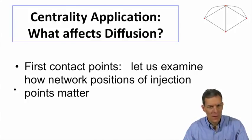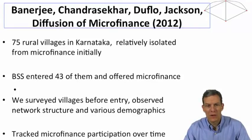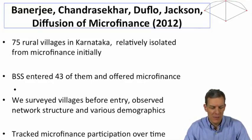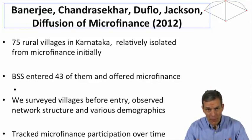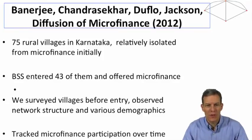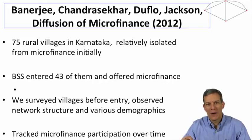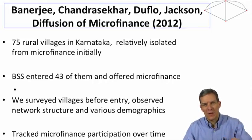This is part of a joint project with Abhijit Banerjee, Arun Chandrasekar, and Esther Duflo. We were looking at diffusion of microfinance in 75 rural villages in Karnataka, southern India. These villages were fairly remote and isolated from outside loan availability initially, and a particular bank, BSS, entered 43 of these villages and offered microfinance. We surveyed the villages and mapped out social networks before the lending agency arrived, then tracked microfinance participation over time.